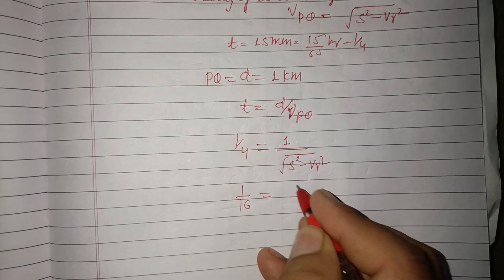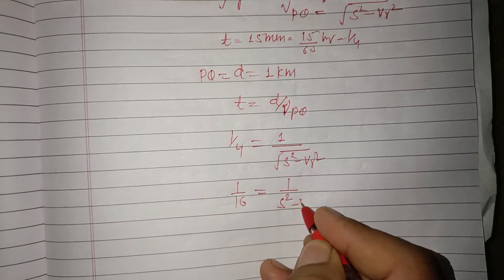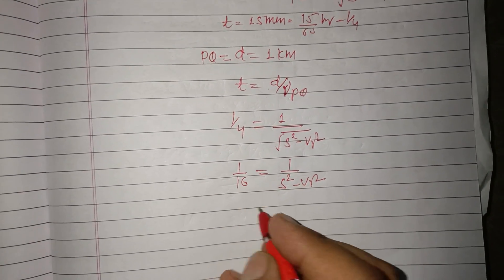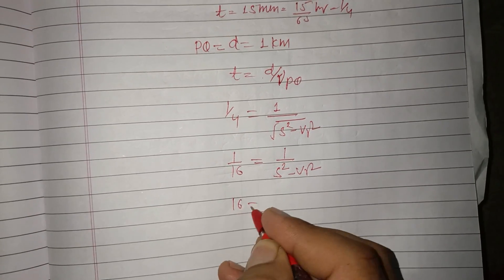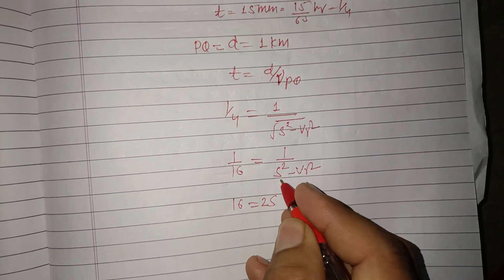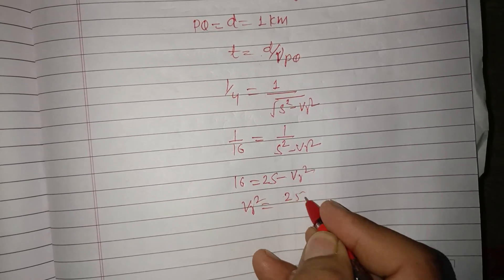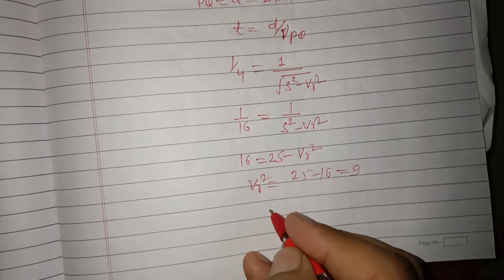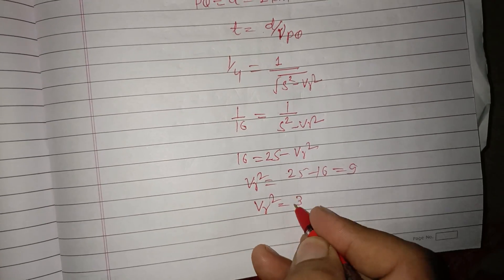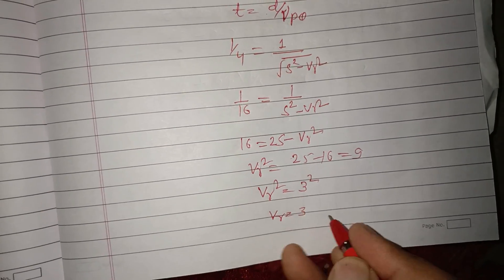So this is one upon 16 equals one upon 5 square minus Vr square. Now reversing, 16 equals 25 minus Vr square. Vr square equals 25 minus 16, this is 9. Vr square equals 3 square, Vr equals 3.